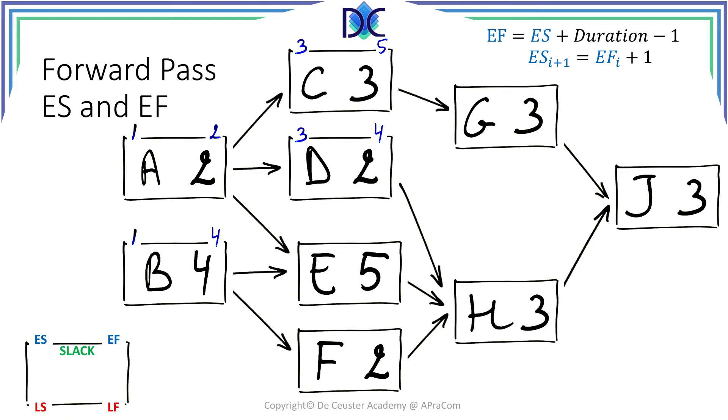And now we see the early finish dates for the predecessors of activity E. Both of them have to be finished so we look at the highest number and B is determining the start time of activity E. It is only when B is finished that E can start. So E can only start on April the fifth. Again, 5 plus 5 minus 1 means that E can finish on April the ninth.